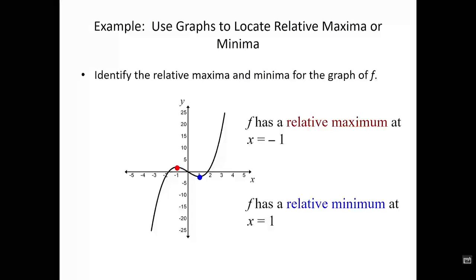Likewise, if you look at an open interval about x = 1, we see that at 1 the function takes on its smallest value in that open interval. So we say that the function f has a relative minimum at x = 1.